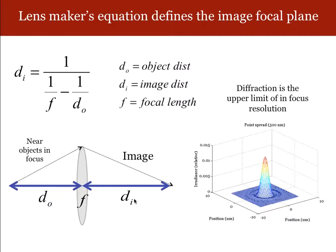If the distance is d0, the image focal plane will be at d sub i, and the lens maker's equation relates them. We also discussed the best possible resolution you could have for a lens of some particular f-number, some aperture and focal length, and that can be calculated in terms of the diffraction formulas we use, such as the Airy disk, which is represented over here.